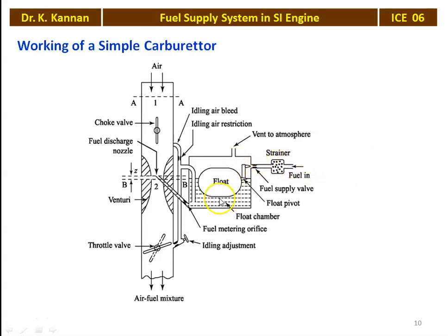Fuel from the fuel tank enters the float chamber through the strainer and through the fuel supply valve. The valve is closed by the float. When the fuel level decreases in the float chamber, the float goes down and the valve opens — fuel enters the float chamber. As fuel enters, the float rises and closes the valve again. A constant level of fuel is maintained in the float chamber using the float. The float chamber is vented to the atmosphere so atmospheric pressure acts above the fuel surface, providing the pressure head for pushing the fuel.